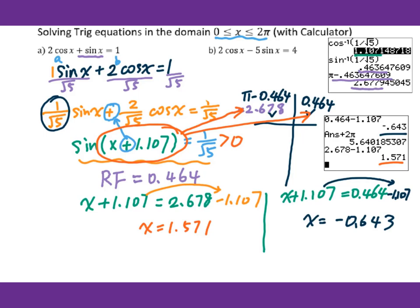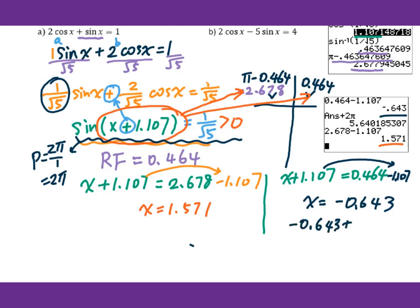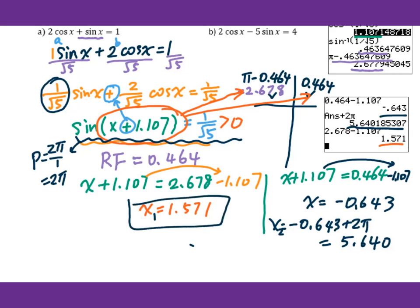Since we are looking for the solution between 0 to 2π, we need to add a period. The period is p = 2π/b, and the number beside x is 1, so p = 2π. So starting from −0.643, I add 2π to get x₂ = 5.640. So x₁ = 1.571 and x₂ = 5.640 are the final answers.